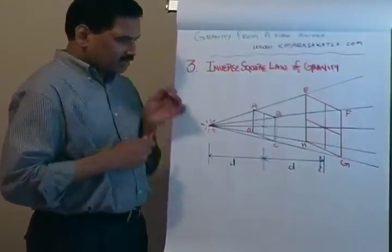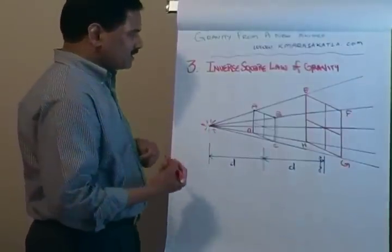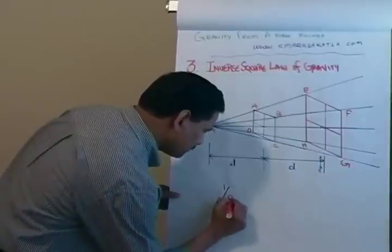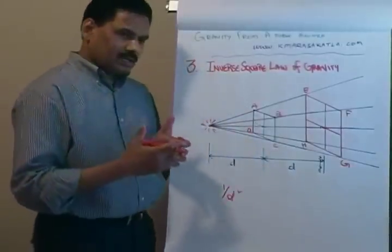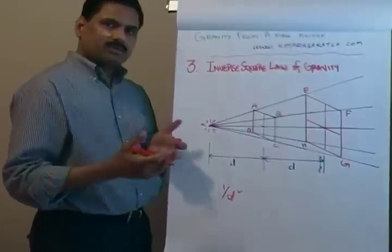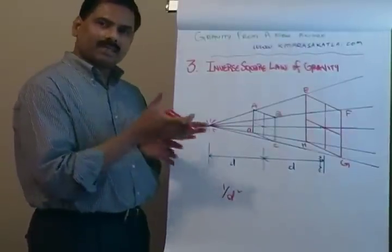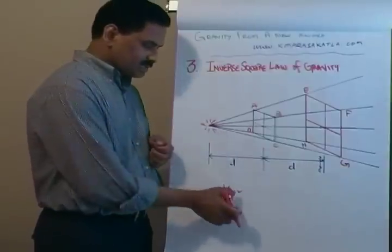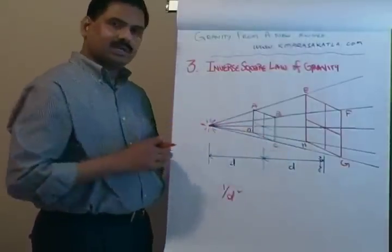so it will get one-fourth of the light it's used to get when the same object was here. So that's why the gravitational theories, they are like it became like a one by d squared. So f equal to g m1 m2 by d squared, that's how this concept of this d squared was derived using this notion.